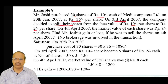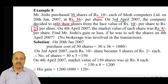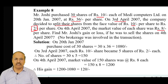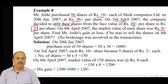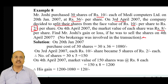On 4th April 2007, the market value of each share was rupees 8. When the shares were split by the company, the face value was brought down to rupees 2, and the next day in the market, the market value of the share became rupees 8. We need to find Mr. Zoshi's gain or loss if he were to sell the shares on 4th April. No brokerage was involved in this transaction.